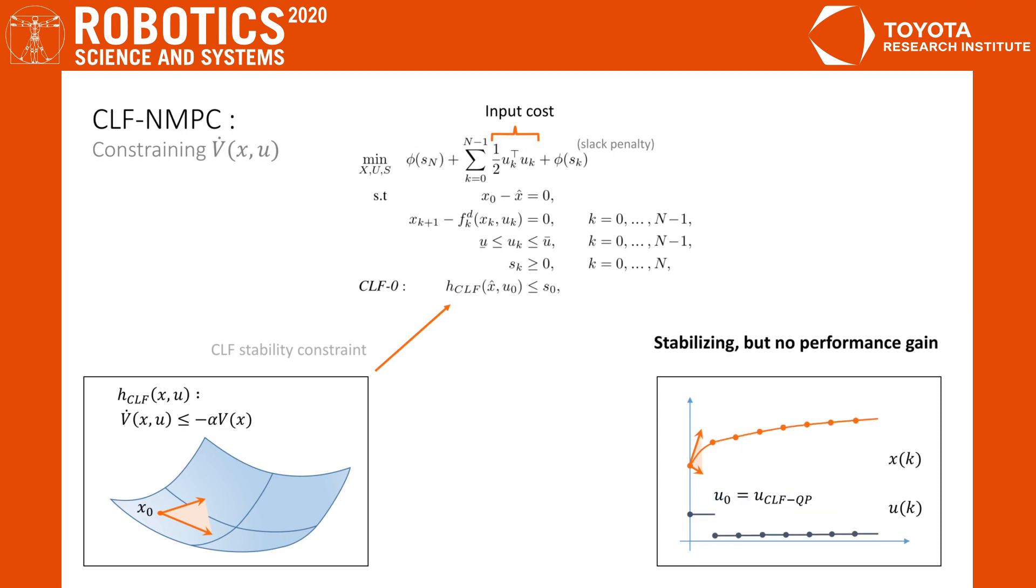The same stabilizing constraint that was present in the CLF-QP appears here on the first segment of the MPC. Unfortunately, what this results in after solving the problem is that the first input is the same as for the CLF-QP and the inputs for the rest of the horizon are trivially set to zero. Indeed, there is nothing in this formulation that motivates the MPC to stabilize the trajectory beyond the first segment.